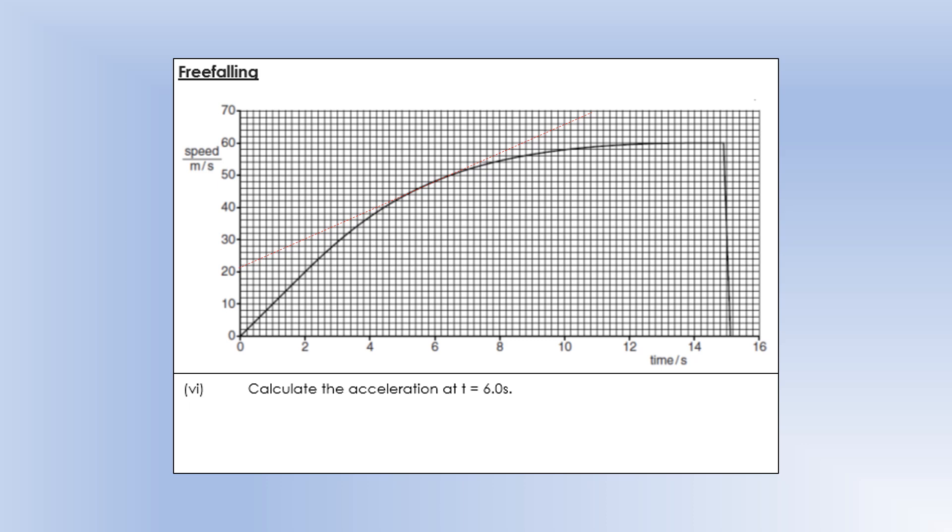So I reckon the tangent's about this line here. And then we need to figure out the gradient of the tangent we've drawn by doing change in speed divided by time for that speed change. So there'll be a range of answers here, because not everyone will draw exactly the same tangent. But I reckon it's something around about 4.4.